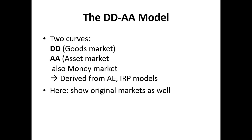Just to recap: the DDAA model has two curves. One represents equilibrium in the goods market, one represents equilibrium in the assets market. The asset market is also derived from the money market, so it's two markets together. The DD curve is derived from the aggregate expenditure model of the Keynesian cross. The IRP model — interest rate parity, also called the asset market — derives the AA curve. We're going to leave those above and to the side from our DDAA model.